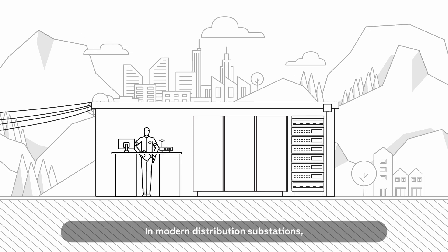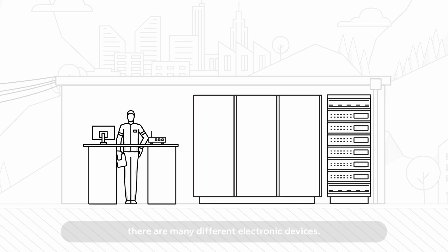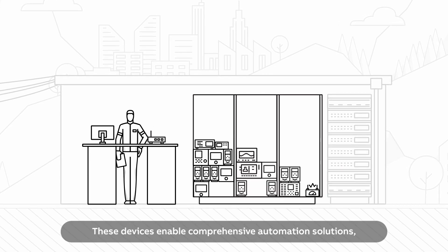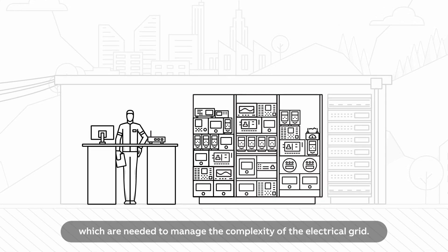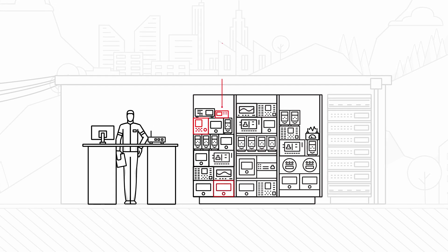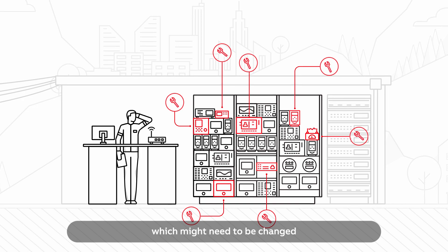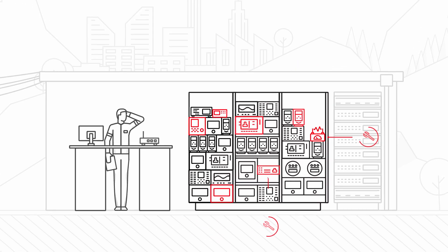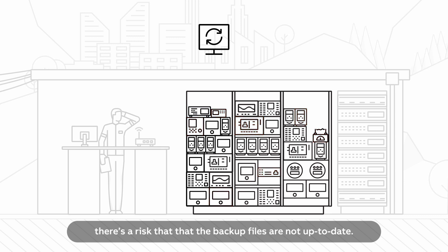In modern distribution substations there are many different electronic devices. These devices enable comprehensive automation solutions which are needed to manage the complexity of the electrical grid. Each of these devices has their own configuration which might need to be changed throughout the lifecycle of the installation. When a configuration needs to be restored, there's a risk that the backup files are not up to date.